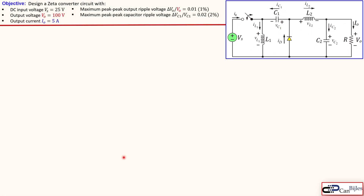This is our circuit. You see here the configuration for the Zeta converter. We assume that our switch is ideal. We have two inductors L1 and L2, two capacitors C1 and C2. There is a load here which is the pure resistive load R. There's a diode here and also we measure the output current and output voltage.